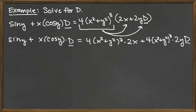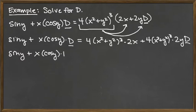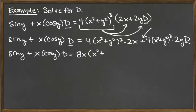So we're going to copy the left-hand side: sine of y plus x times cosine of y, those two things multiplied by d. On the right side, we distribute: 4 times x squared plus y squared raised to the third, multiplied by 2x for the first term. I'll go ahead and combine the 4 times 2x to give us 8x times that factor x squared plus y squared to the third.